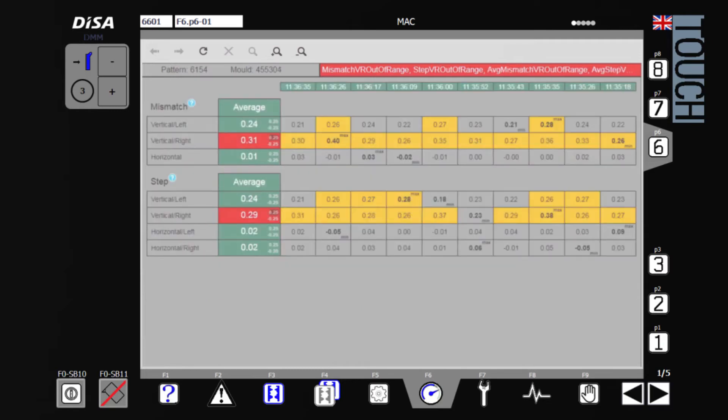The table views show data from the last ten molds measured by the MAC. Values for each out of tolerance mold are highlighted in yellow. Like the dashboard, if the average value of these ten molds is out of tolerance, the value in the first column is highlighted in red.